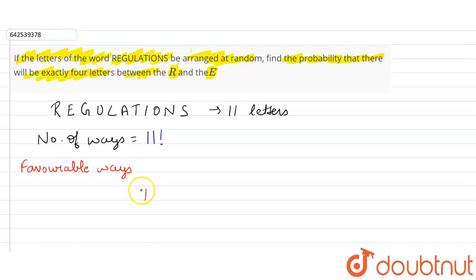we have to make sure there are exactly four letters between R and E, and other letters can be arranged. So if these four letters are arranged between R and E,